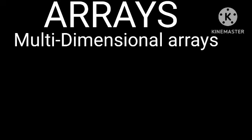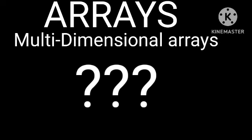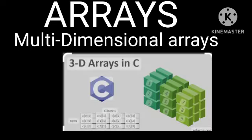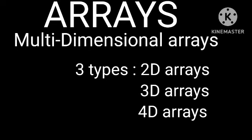Let us discuss multidimensional arrays. A multidimensional array has n indices and is a collection of m1 × m2 × m3 × ... × mn elements. There are three types under multidimensional arrays: 2D arrays, 3D arrays, and 4D arrays.